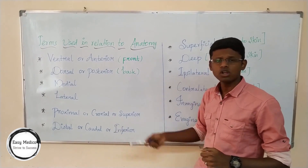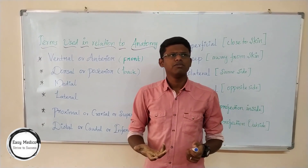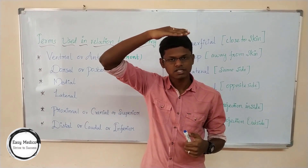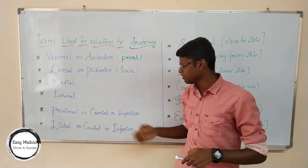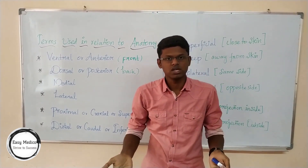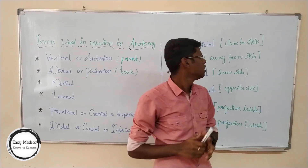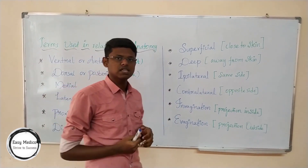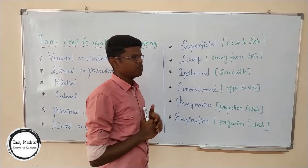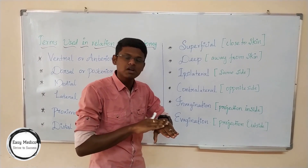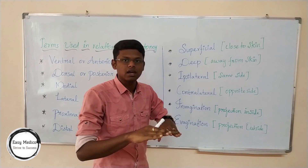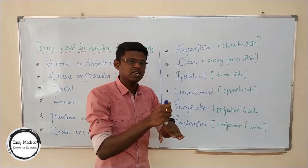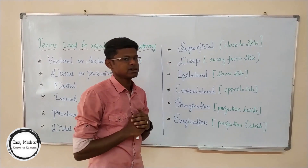Proximal, cranial, or superior — superior refers to the higher portion of anything. And inferior refers to the lower portion of anything. Now, superficial and deep. These are used in many places. Superficial refers to the top surface of your skin or anything — the superficial layer. And the deep layer is what intervenes inside, known as the deep layer.